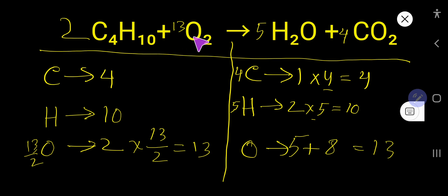So you have now this 13 oxygen, 13 oxygen molecule. Then you need 2 times 5, that is 10, and then 2 times 4, that is 8. So this is the balanced equation.